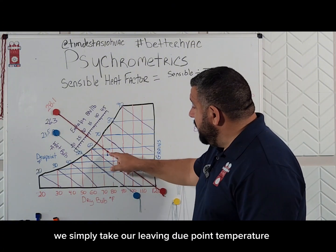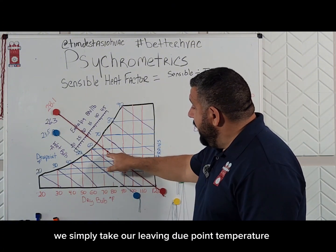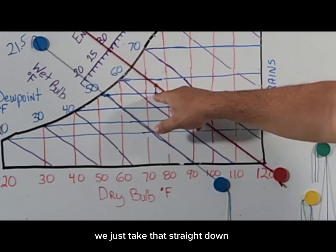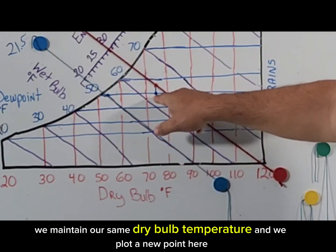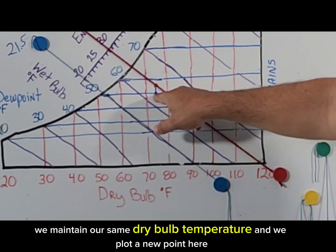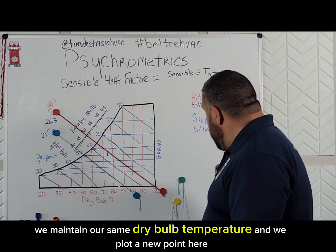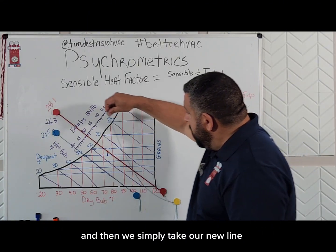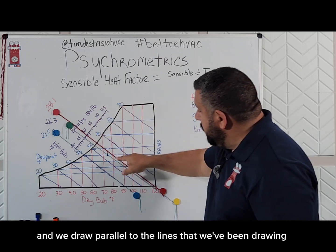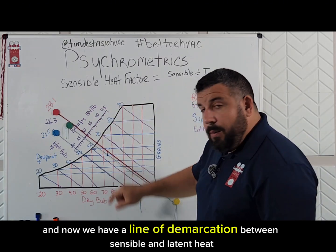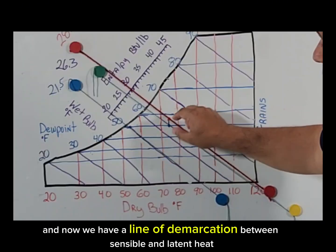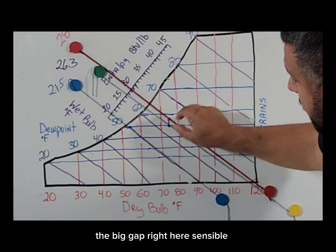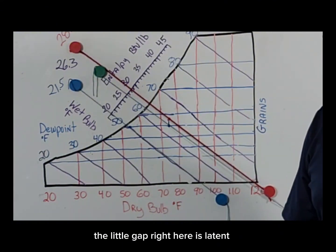Last time we talked about that — we simply take our leaving dew point temperature, which in this case was 50. We just take that straight down, we maintain our same dry bulb temperature, and we plot a new point here. Then we simply take our new line and draw it parallel to the lines that we've been drawing. Now we have a line of demarcation between sensible and latent heat. The big gap right here is sensible; the little gap right here is latent.